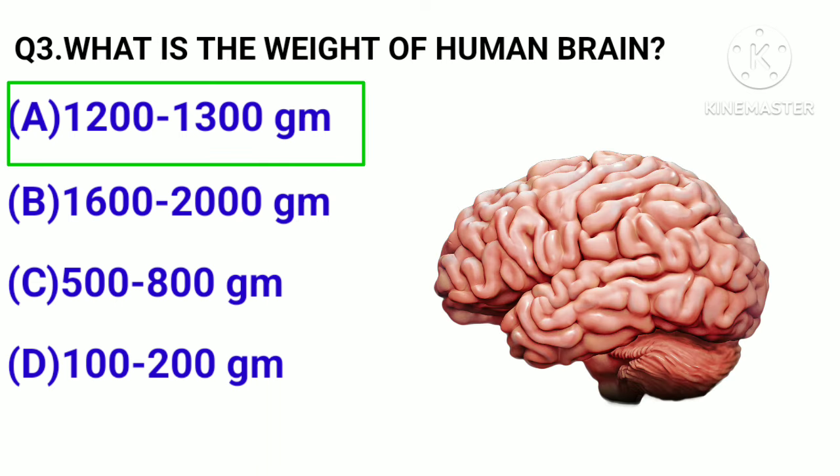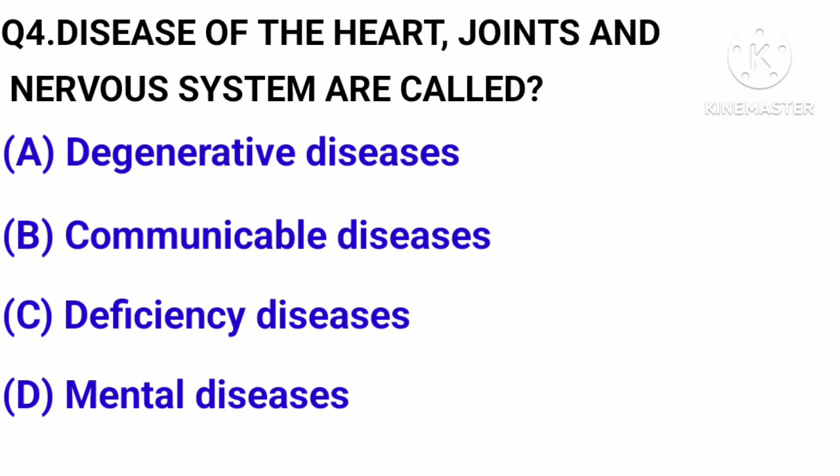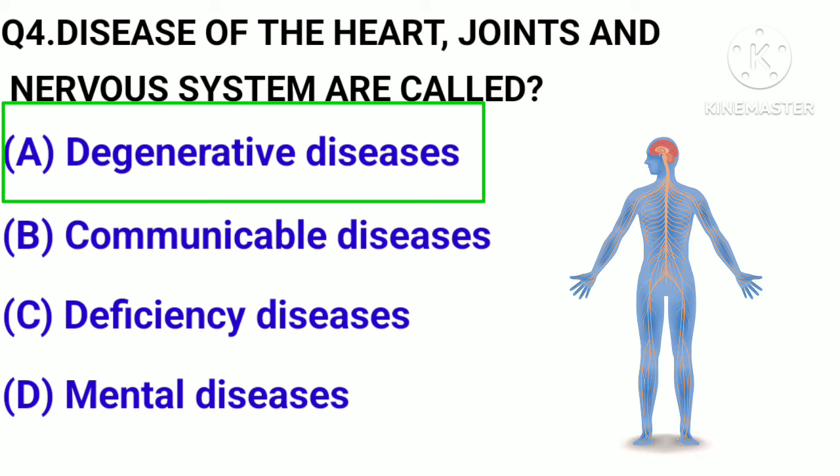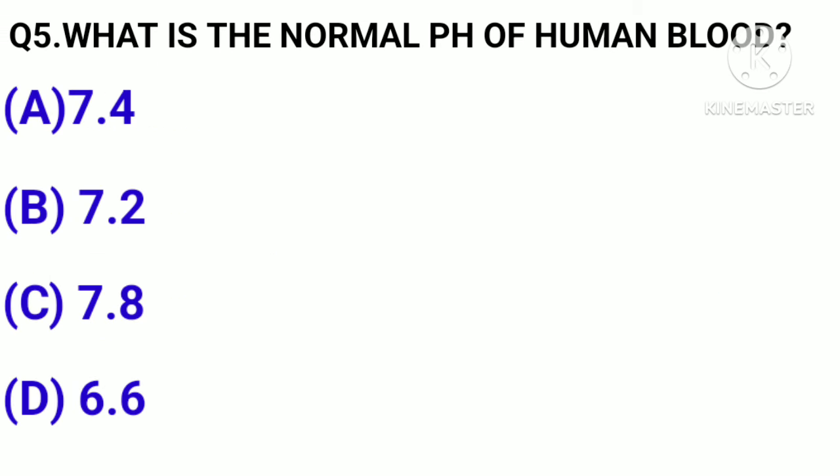Question number 4. Disease of the heart, joints, and nervous system are called: A, Degenerative disease. B, Communicable. C, Deficiency. D, Mental. Correct answer: Option A, Degenerative disease.